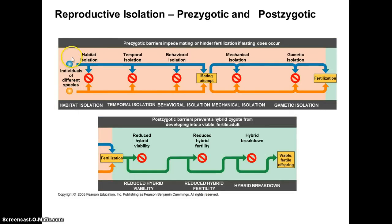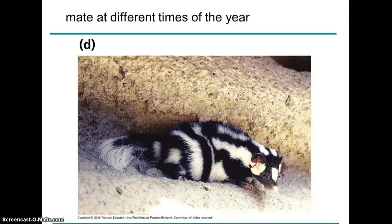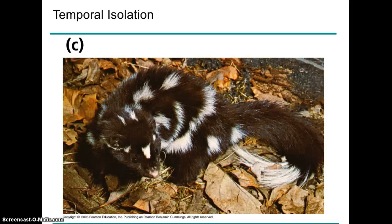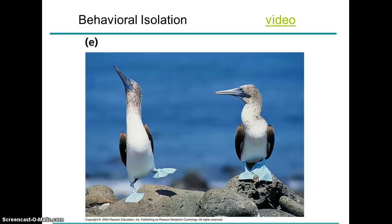Habitat isolation: if two species are not even getting in proximity to each other, then there's not going to be the potential for mating between them. If they are active at different times of the day, or if their mating seasons don't coincide — as is the case with these skunks — then those two are not going to breed with each other.